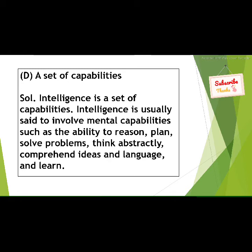Intelligence usually involves mental capabilities such as the ability to reason, plan, solve problems, think abstractly, comprehend ideas and language, and learn. Different kids demonstrate this differently — some work simply, some work with creativity, some with their own design. It depends on your intelligence and your ideas.